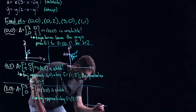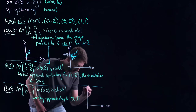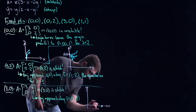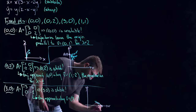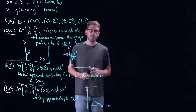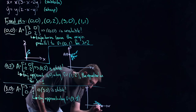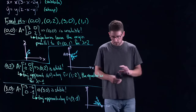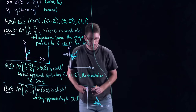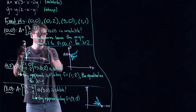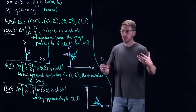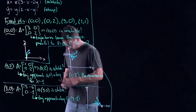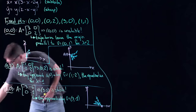Sketching the local linearization at (3, 0), the fixed point sits on the x-axis. We're coming in parallel to the slow eigendirection. It's stable and absorbing nearby trajectories. I've now got three local linearizations that I can use like puzzle pieces to figure out what the global picture looks like. There's one more fixed point to work on before we put it all together.